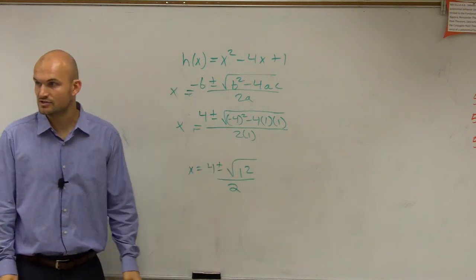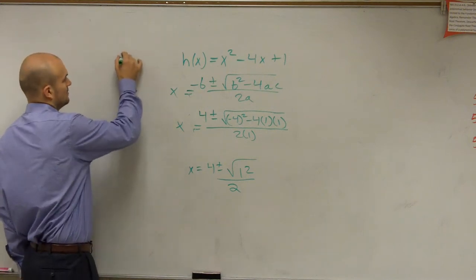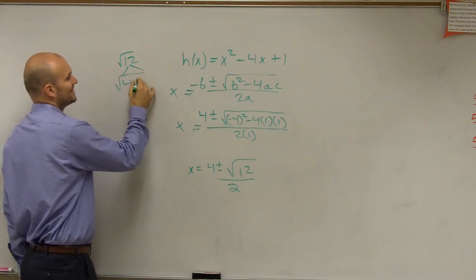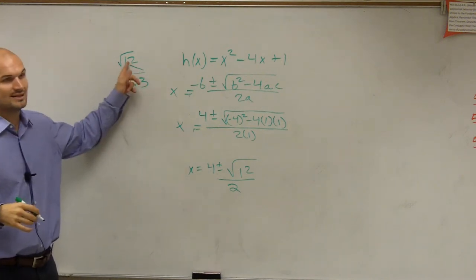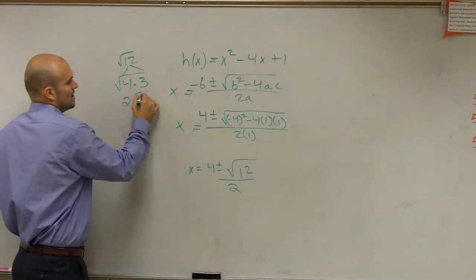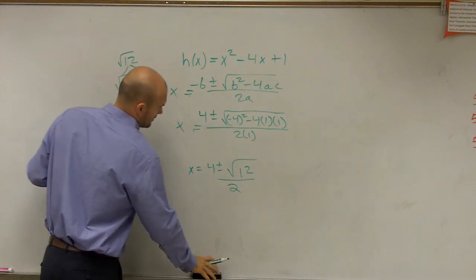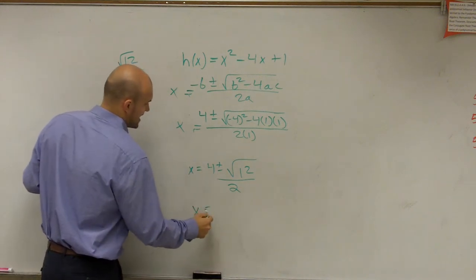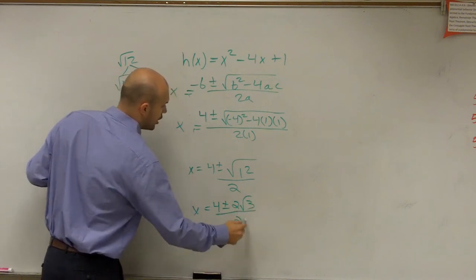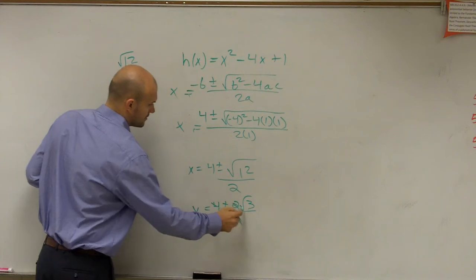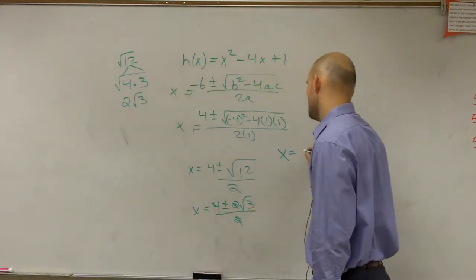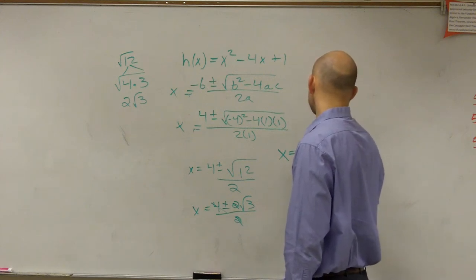Well, I can simplify the square root of 12 as 2 square root of 3, right? I'm going to pass back your guys' quiz. We're a little rough on our simplifying radicals, right? I can break that down 12. I can break that down into 4 times square root of 3. Square root of 4 is 2 radical 3, right? So I can write that as x equals 4 plus or minus 2 radical 3 all over 2. Divide that through. And I can say my zeros are x equals 2 plus or minus the square root of 3.